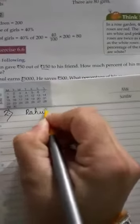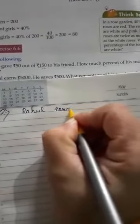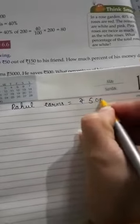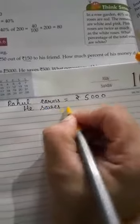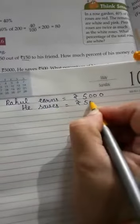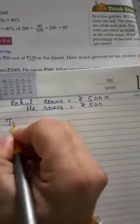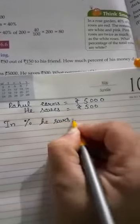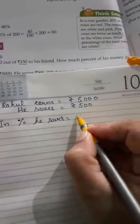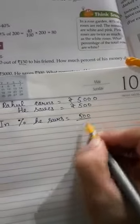Rahul earns equal to rupees 5000. He saves rupees 500. To find the percentage, he saves 500 in the numerator and total 5000 in the denominator.